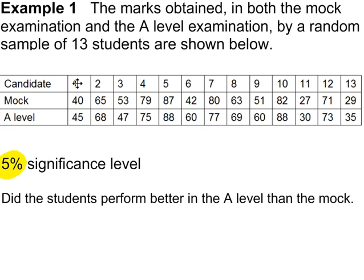These are paired values. Student number two — that's the mock exam mark and the A-level mark for student number two. So these data values are in pairs. We're using a 5% significance level and we want to test to see if the students performed better in the A-level than the mock.